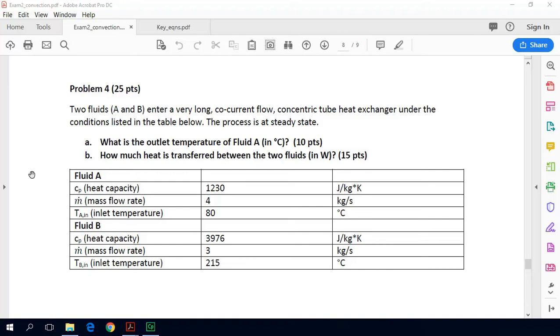The problem says two fluids, fluid A and fluid B, enter a very long co-current flow concentric tube heat exchanger under the conditions listed in the table below. The process is at steady state. What is the outlet temperature of fluid A? And then how much heat is transferred between the two fluids?